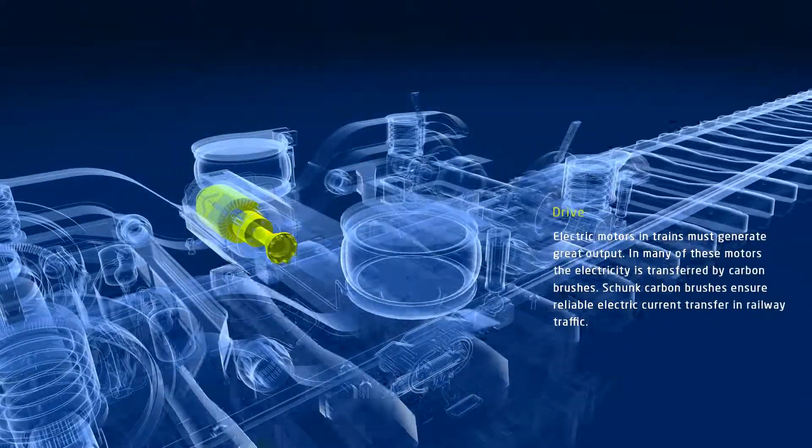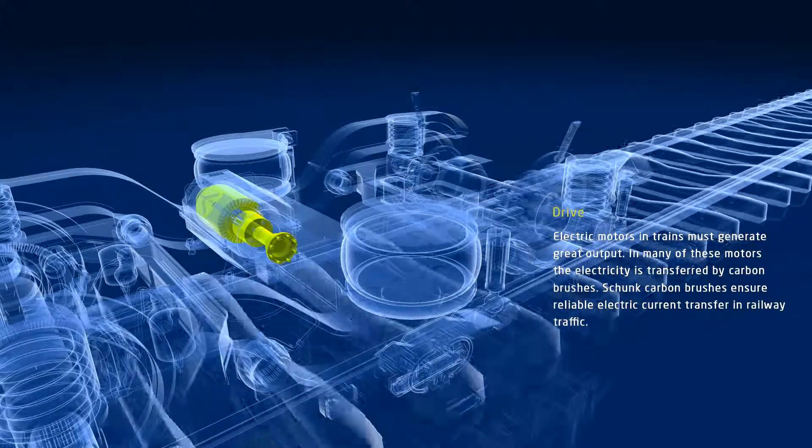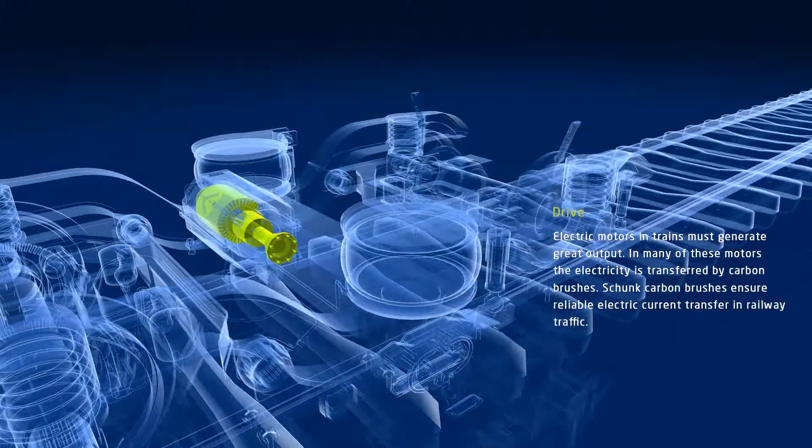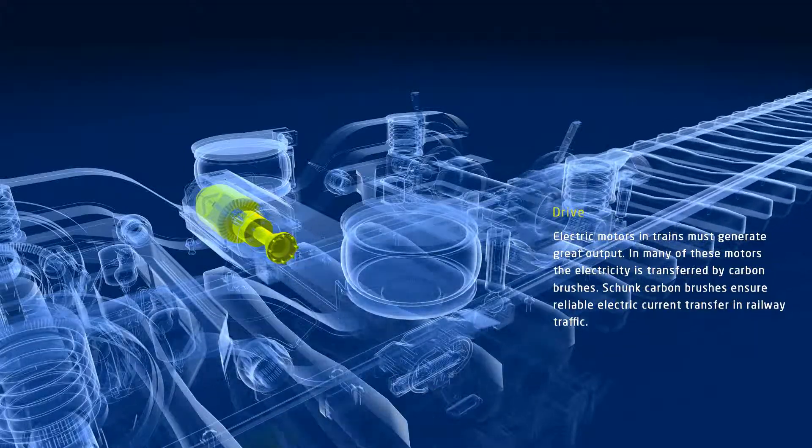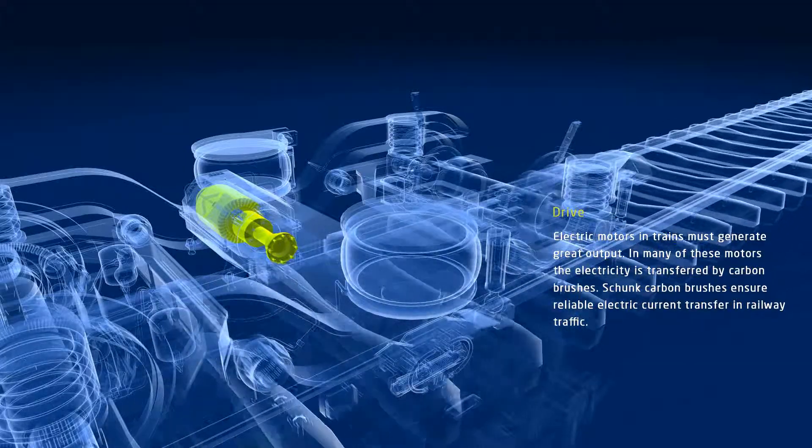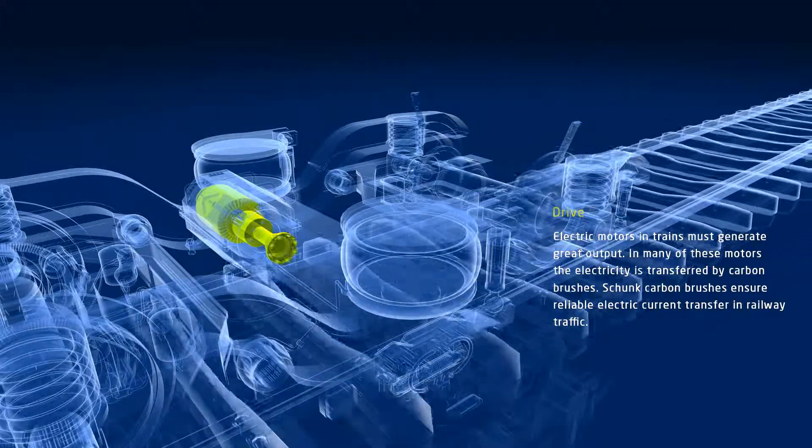High performance is required in railway motors. In many of these electric motors, the electricity is transferred by carbon brushes. As one of the most successful manufacturers in the world, Shunk has produced high-quality carbon brushes for railway traffic for decades, ensuring reliable electric current transfer.